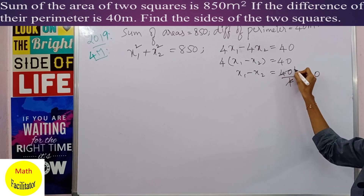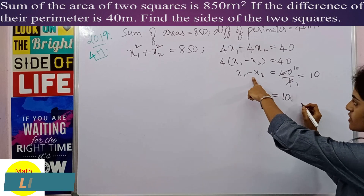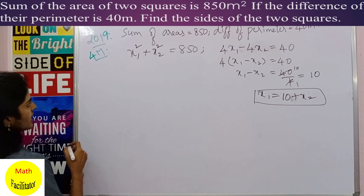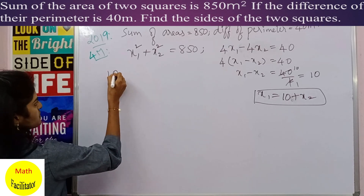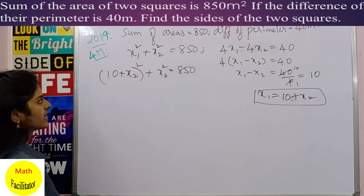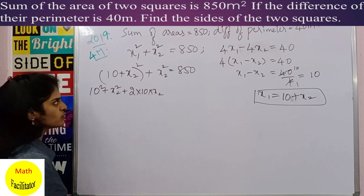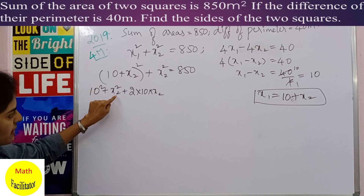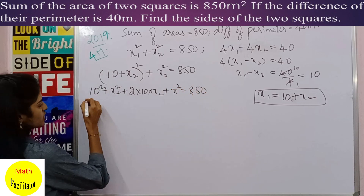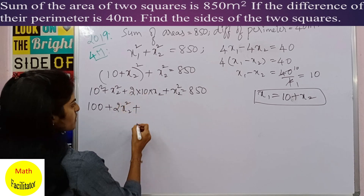From x1 - x2 = 10, we get x1 = x2 + 10. Substituting into x1² + x2² = 850: (10 + x2)² + x2² = 850. Expanding using (a + b)² = a² + 2ab + b²: 100 + 20x2 + x2² + x2² = 850, which simplifies to 2x2² + 20x2 + 100 = 850.